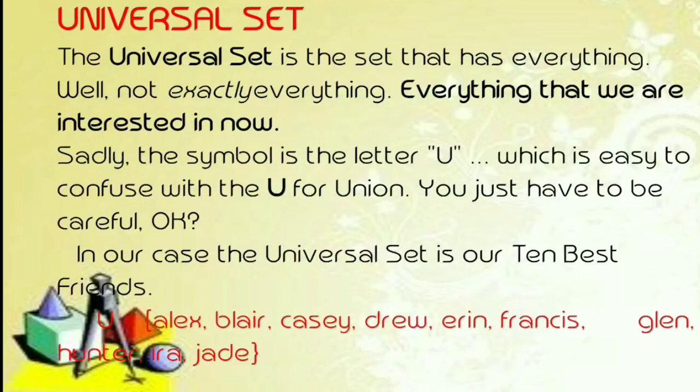Universal set. The universal set is a set that has everything — well, not exactly everything, but everything that we are interested in now. Sadly, the symbol is the letter U, which is easy to confuse with U for union — you just have to be careful. In our case, the universal set is the 10 best friends: U is equal to Alex, Blair, Cassie, Drew, Erin, Francis, Glenn, Hunter, Ira, and Jade.